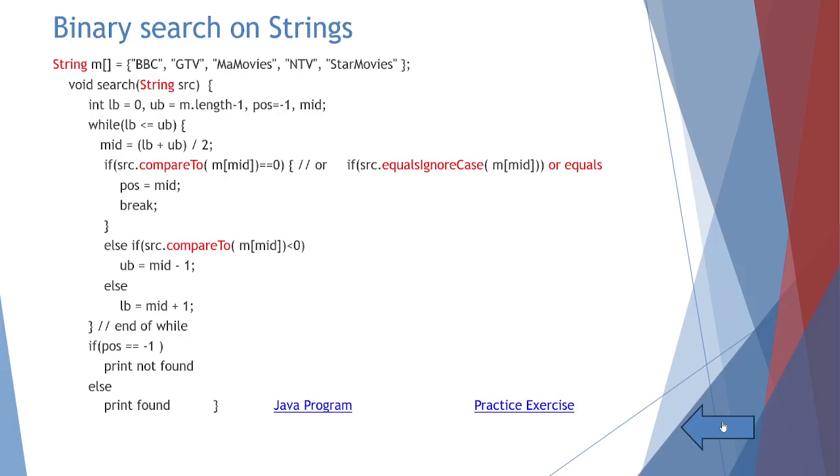Some string M is the array we are initializing. BBC, GTV, MaMovies, NTV, StarMovies. Search is reading a string SRC, LB equals to 0, UB equals to M.length minus 1, position minus 1, mid. Our good old program, while LB less than equal to UB, mid is equal to LB plus UB divided by 2. So, if SRC, the search element dot compareTo M of mid, M is the array, mid is the index, M of mid double equals to 0, then position is equal to mid break. In place of compareTo in the first if statement, we may use equalsIgnoreCase or equals depending on the programmer's wish.